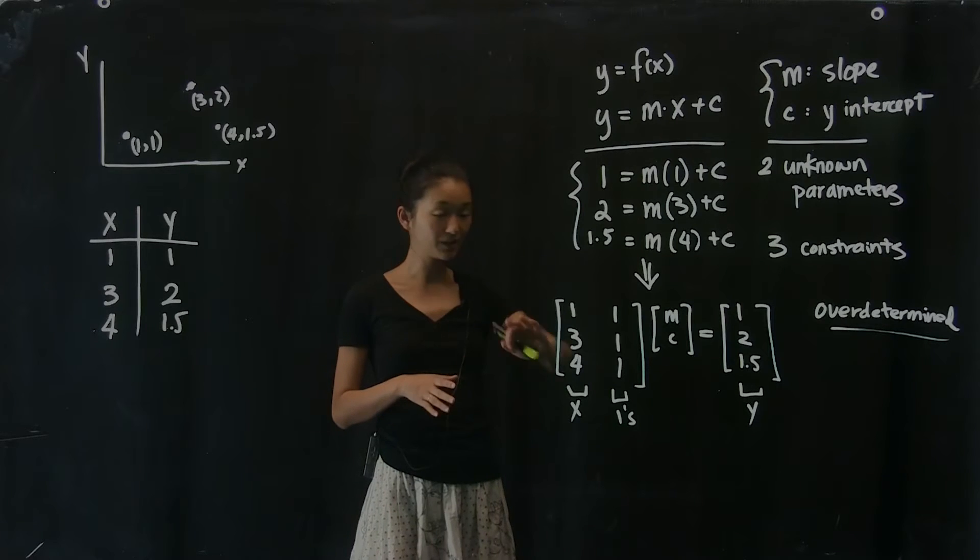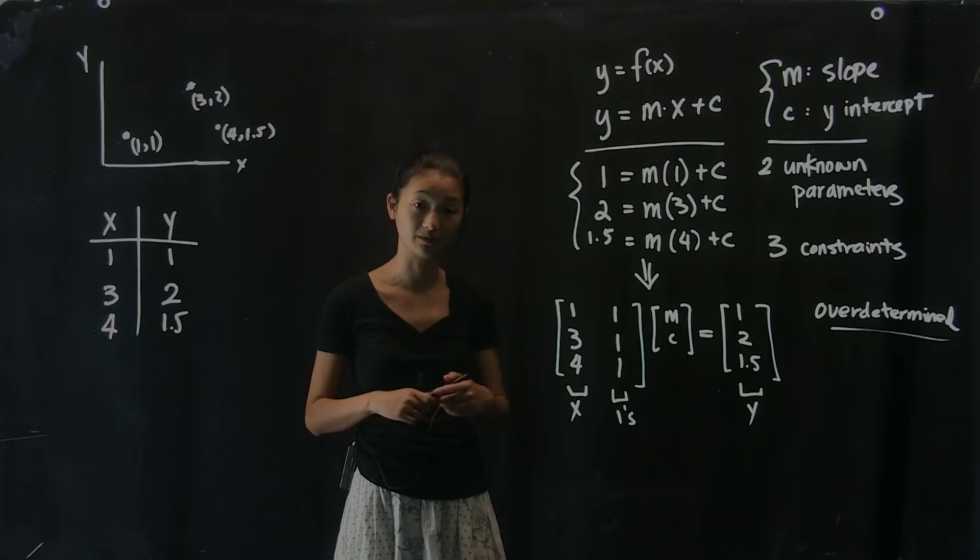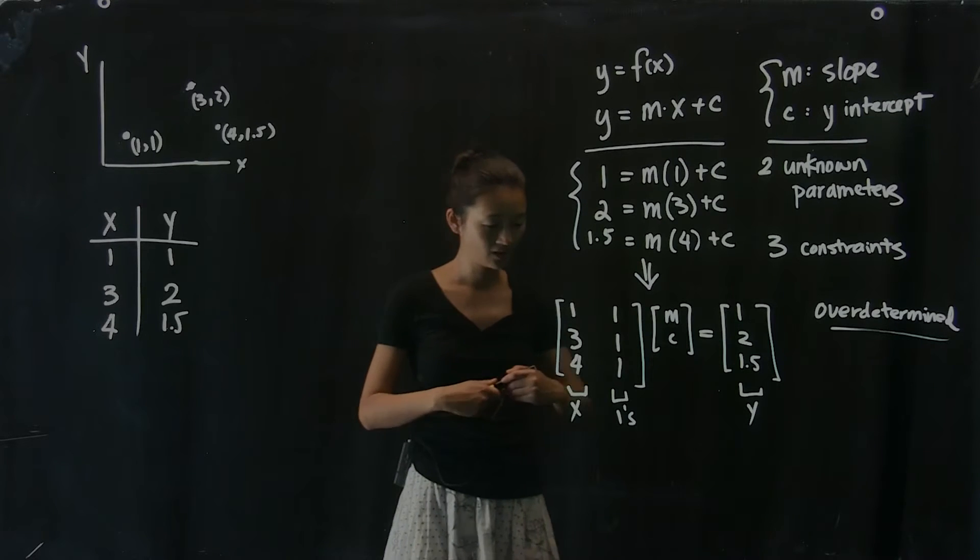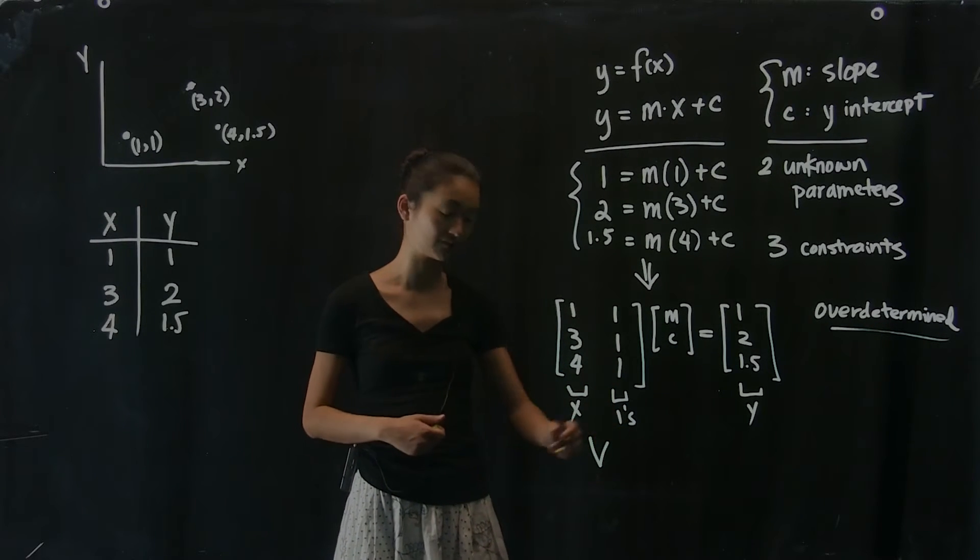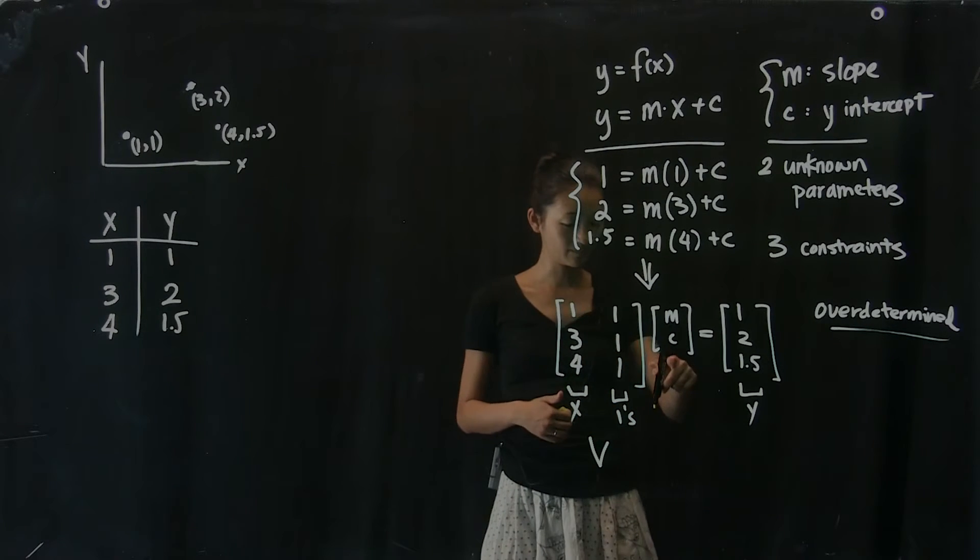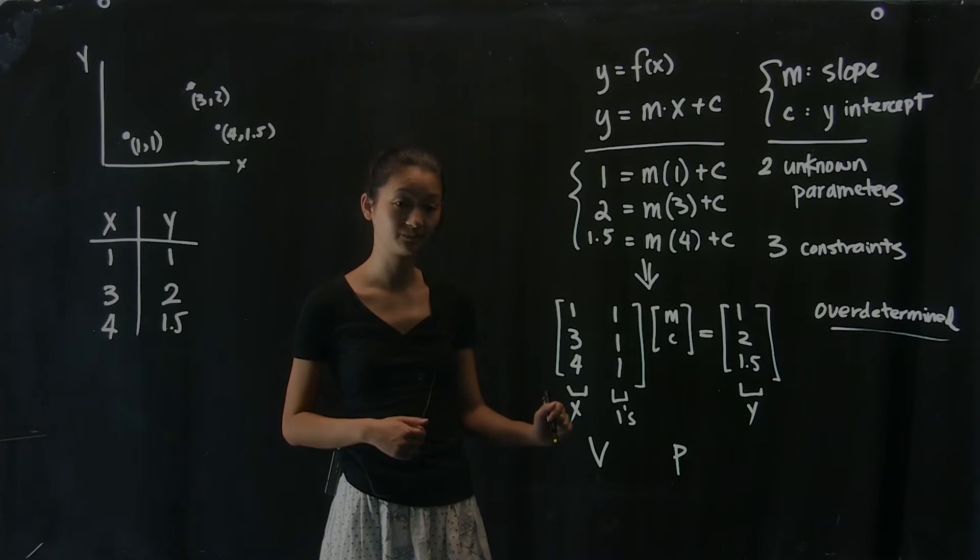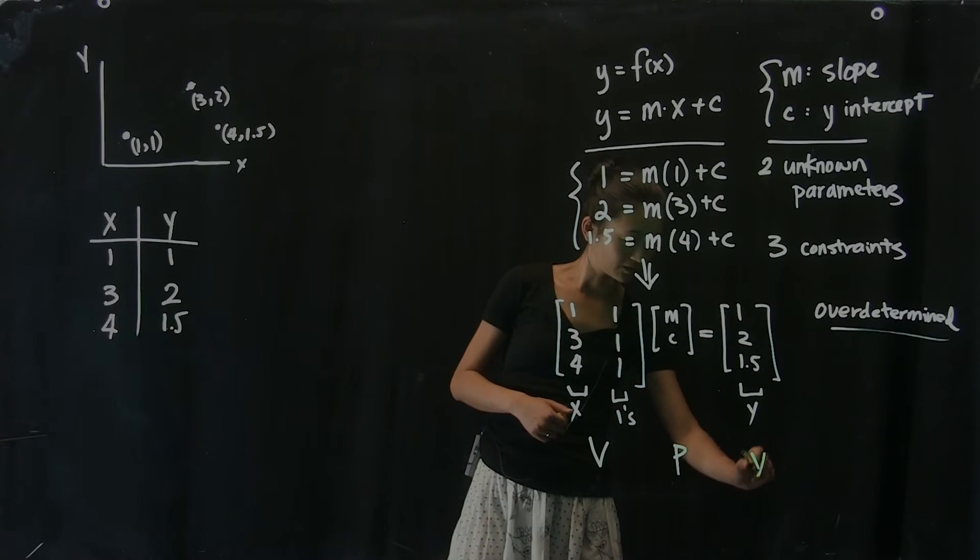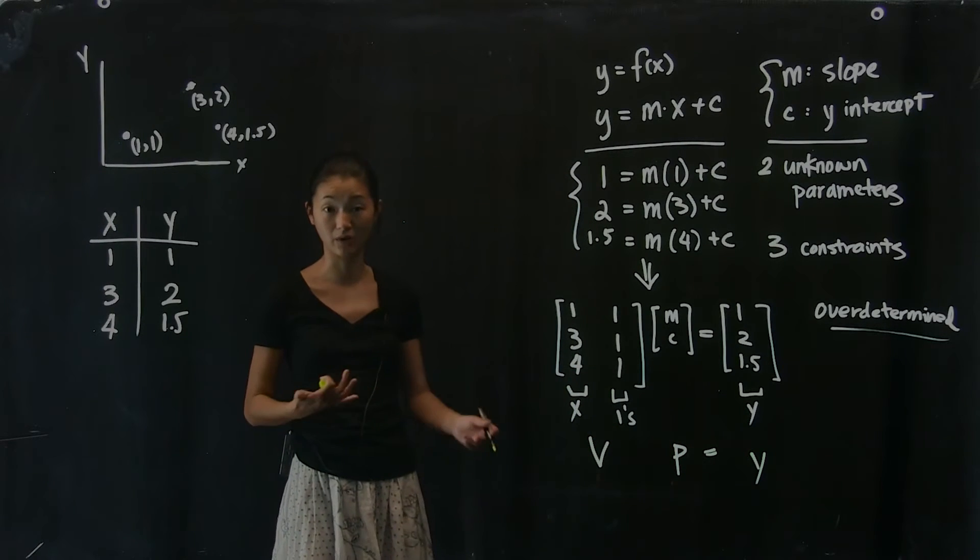And so these matrices, it turns out, has a special name to distinguish it from a couple of other things that we can construct. This matrix here is known as the V matrix, which stands for Vandermonde, which is the guy's name. This matrix I'm going to call my P matrix. P stands for parameters. And over here, I'm going to call this vector the y-vector because it is a vector of my y-coordinates.